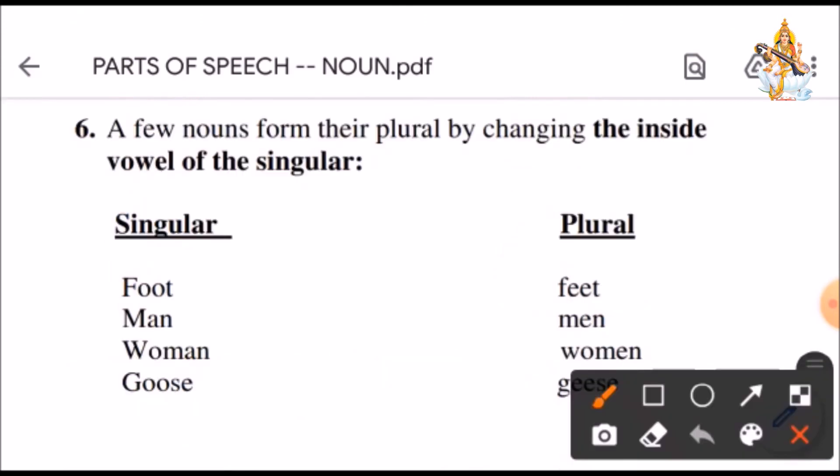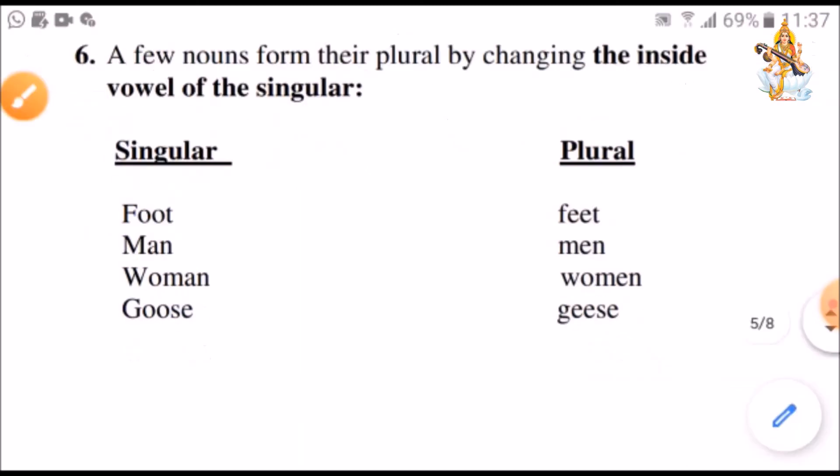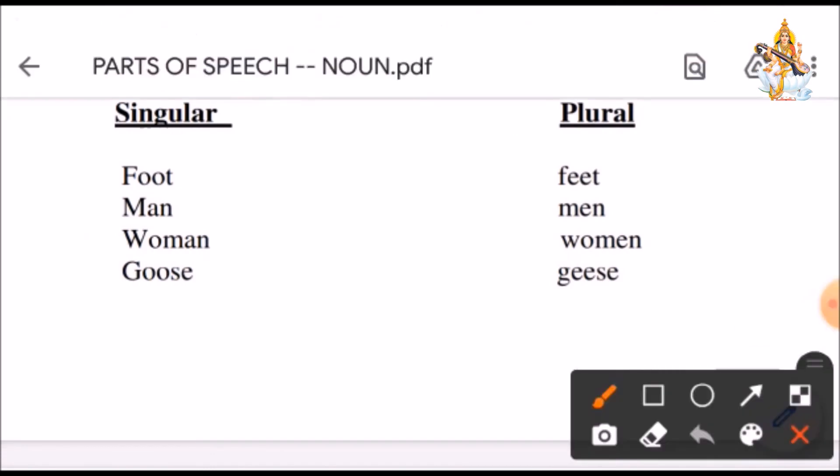See, a few nouns form their plural by changing the inside vowel of the singular. Here are a few examples. Foot, it has got O vowel. Man and woman has got A vowel in the end. Goose also has O. So, foot will become feet. Man will become men. Women will become women. Goose will become geese. So, we have changed vowels to convert them into plural.